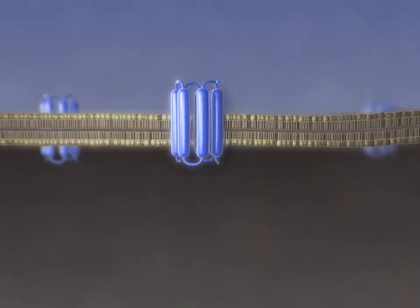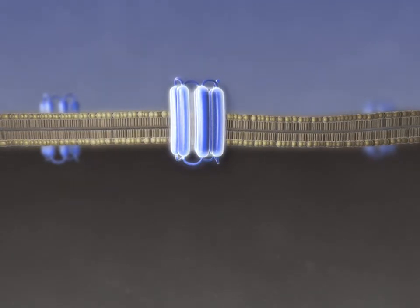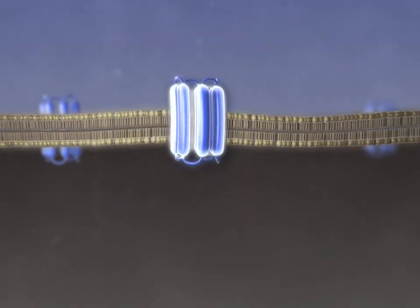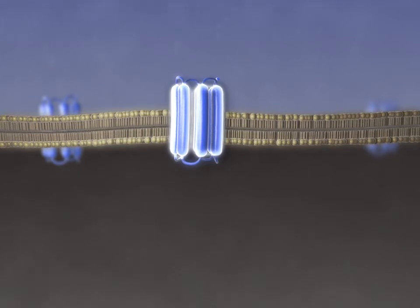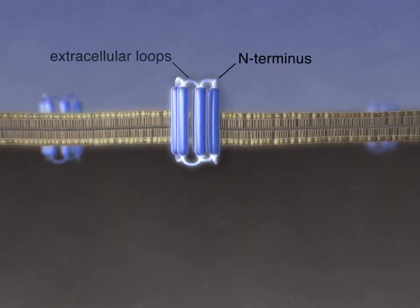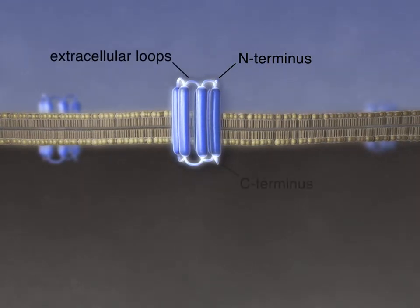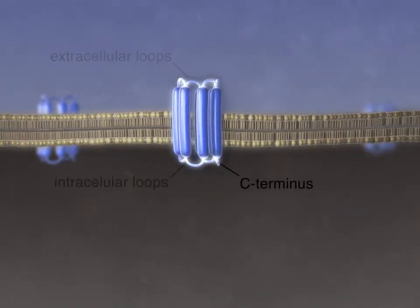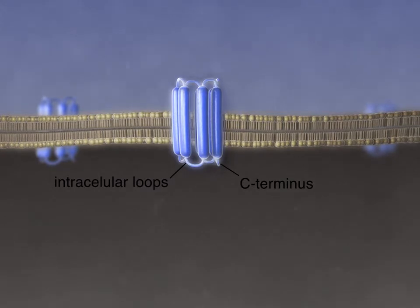GPCRs all have a similar structure, with seven transmembrane helices embedded in the plasma membrane, with an extracellular N-terminus and three extracellular loops, and an intracellular C-terminus with three intracellular loops.